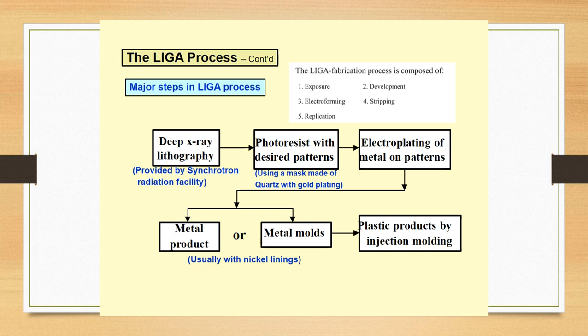First of all, we give a deep x-ray lithography that is provided by the synchrotron radiation facility. After this, the photoresist with desired patterns is formed on the substrate material using a mask made up of quartz with gold plating. Then electroplating of the metal on the patterns is done. So we get a metal byproduct or metal molds, usually with nickel linings. And finally, plastic products by injection moldings or replicable molds and metal products can be formed.